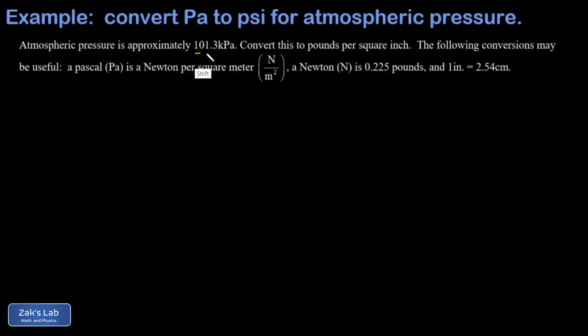In this problem we're taking a value of atmospheric pressure that's 101.3 kilopascals and we're asked to convert this to pounds per square inch, which is also known as PSI. We're told the following conversions might be useful.